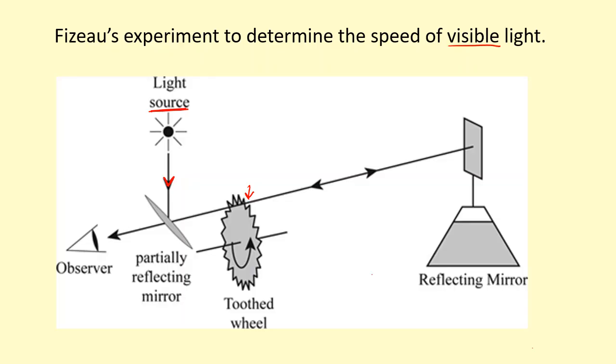It goes through that gap and it reflects off this mirror and it comes back, and again it has to go through a gap in that toothed wheel. Maybe the same gap, maybe a different one. And this time instead of being reflected by the partially reflecting mirror, it goes through the mirror and can be seen by the observer.